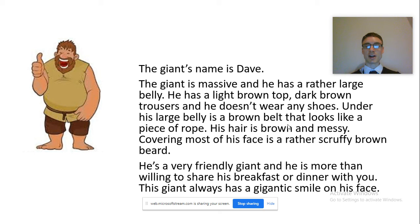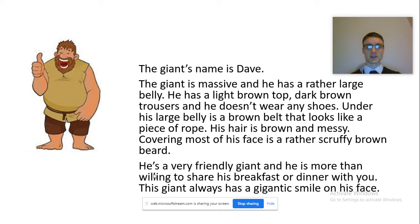'Under his large belly is a brown belt that looks like a piece of rope.' I used the fly high challenge about using different sentence starters — position words can be a way of starting differently. 'His hair is brown and messy.' And then starting in a different way again: 'Covering most of his face is a rather scruffy brown beard.' That would be a noun phrase. Then describing his personality: 'He's a very friendly giant and he's more than willing to share his breakfast or dinner with you. The giant always has a gigantic smile on his face.'